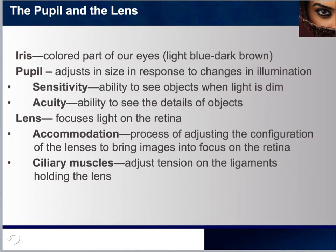The pupil is in the center of the iris — basically a hole that adjusts in size in response to changes in illumination. The brighter the environment, the more constricted the pupil; the darker the environment, the more dilated it is. This adjusts the amount of photons entering the eye. Our ability to see can be assessed by sensitivity — our ability to see objects in dim light — and acuity, our ability to see the details of objects.